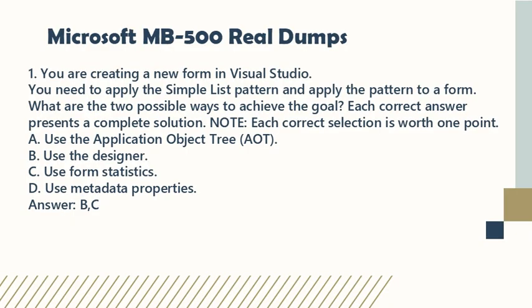Question 1. You are creating a new form in Visual Studio. You need to apply the simple list pattern and apply the pattern to a form. What are the two possible ways to achieve the goal? Each correct answer presents a complete solution. Each correct selection is worth 1 point. A. Use the application object tree (AOT). B. Use the designer. C. Use form statistics. D. Use metadata properties. Answer: B, C.